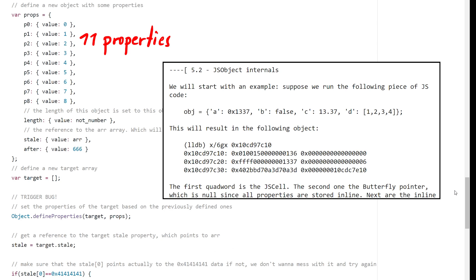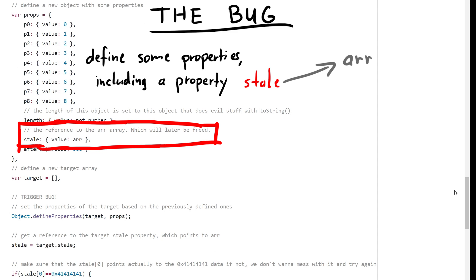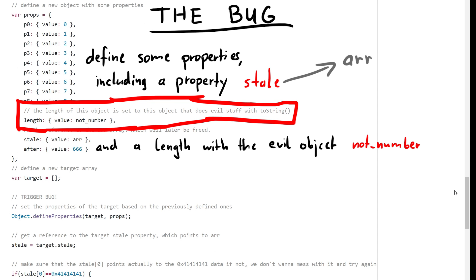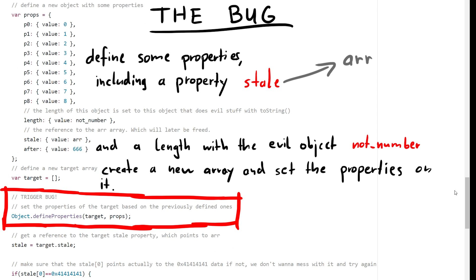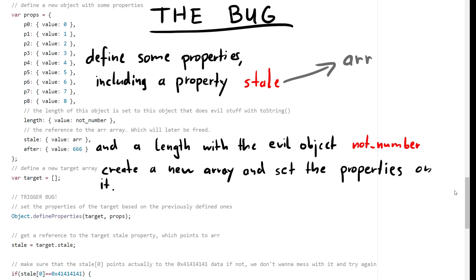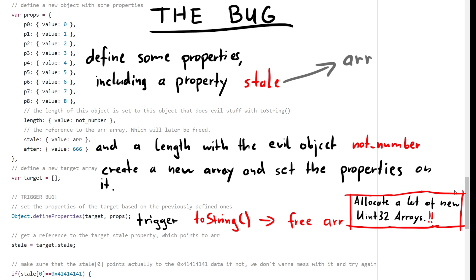We define an object that we use as properties — and I think we allocate more than just two, so the properties are not stored inline, but I'm not 100% sure here. Anyway, one of these properties is called stale and is set to the array reference — that is the property that the toString function will set to null. Another property is the length, which is set to the notNumber object. Then we create a new empty array target and apply those properties to it with Object.defineProperties. This means all those properties we defined will be set to the target array. During this assignment the toString function of notNumber will be called and causes the garbage collection of the array, as well as the allocation of a lot of uint32 arrays. And this is where the bug happens.